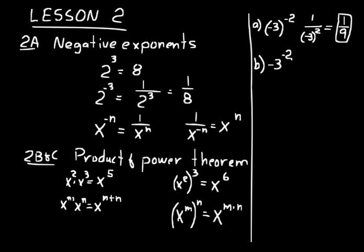In practice problem B, the whole quantity is negative — that's what the negative sign out front expresses. So you take 3 to the minus 2, put it in the denominator, and make it 3 to the positive 2, with a negative sign out front. That equals negative 1 ninth. The top problem was positive 1 ninth; the bottom was negative 1 ninth. It's important that you distinguish the difference between those two problems.